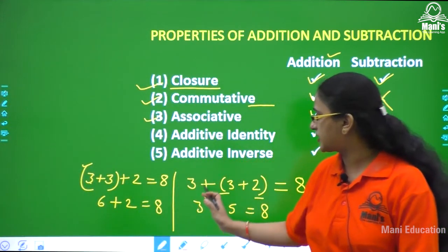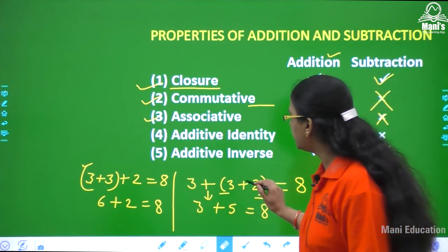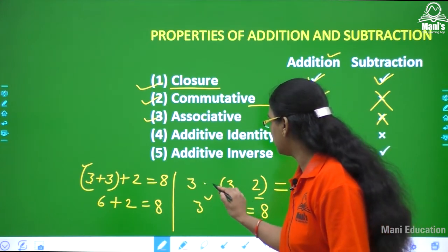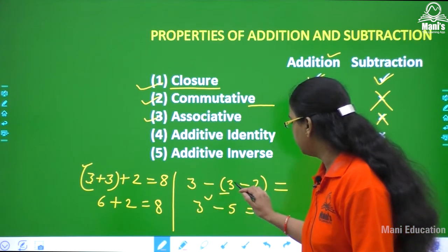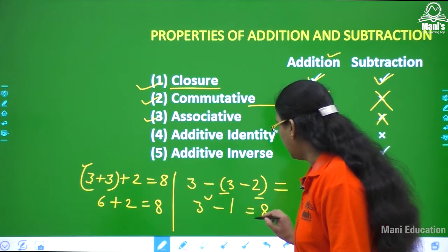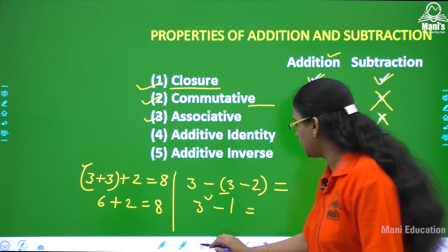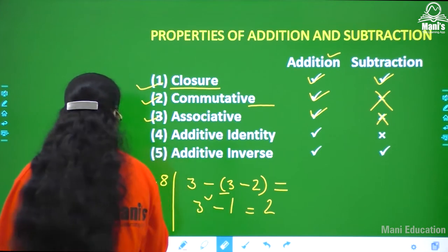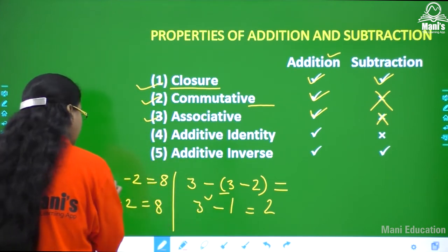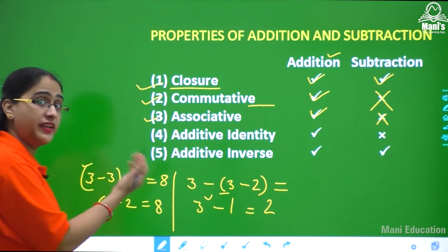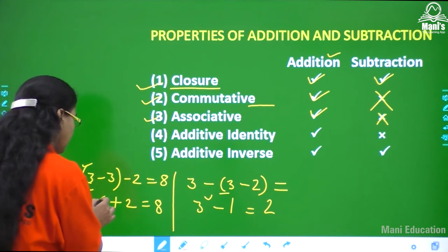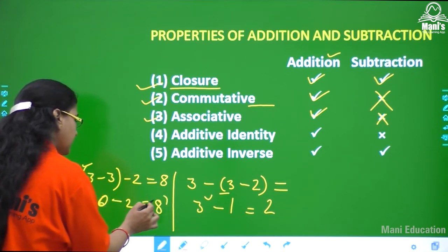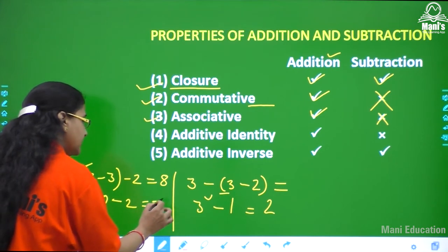Now let's check if subtraction follows associative property. Replacing plus with minus: 3 minus 1 gives result of 2. Then doing 3 minus 3 — same integers with opposite sign gives 0, and then minus 2. The answer is minus 2, which is different. So associative property does not follow for subtraction.